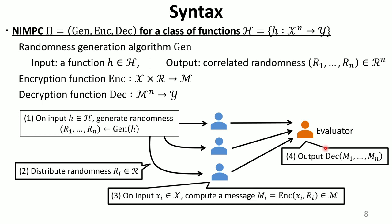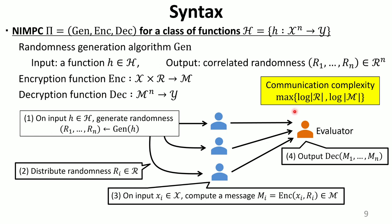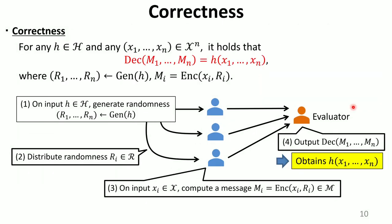Finally, the evaluator computes a decryption function on all the messages. The efficiency of NIMC protocols is measured by communication complexity, which is defined as the maximum number of bits to send randomness and messages. The correctness of NIMC is straightforward: for any function H and any N inputs, we require that the output of the evaluator is equal to the output of the function H.